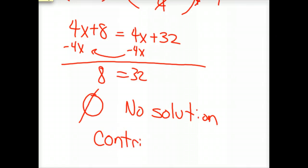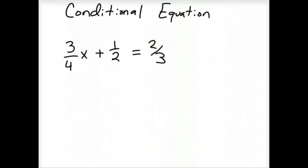So when you have, when your variable disappears and you have numbers that can't be equal, then we've got a contradiction. Can't happen. So now let's move on to a conditional equation.